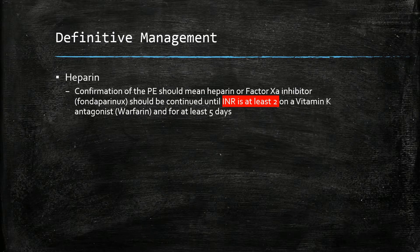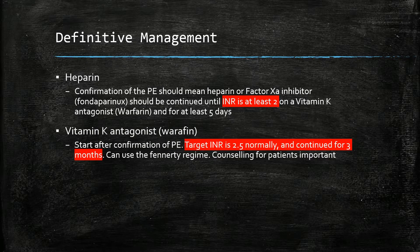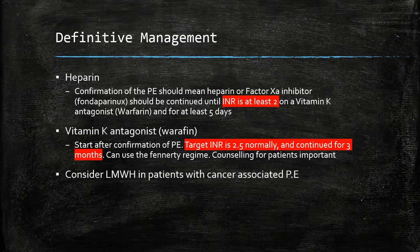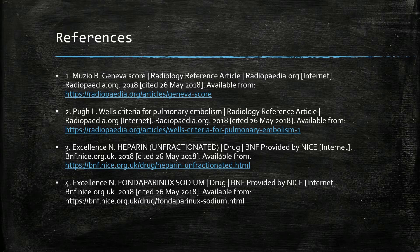Definitive management involves continuing heparin or a factor Xa inhibitor until the INR is at least 2 on a vitamin K antagonist — notably warfarin — for a minimum of 5 days. Warfarin can be prescribed after the PE is confirmed. The target INR is usually 2.5 and should be maintained for 3 months, using the Fennerty regime as a prescribing guideline. Counselling patients on warfarin therapy is also very important. Low molecular weight heparins are preferred in patients with PE associated with cancer.